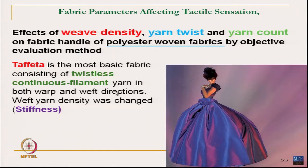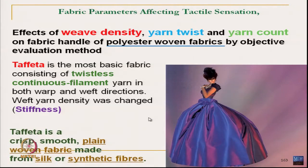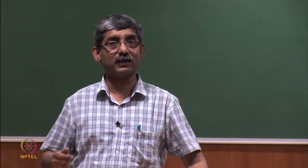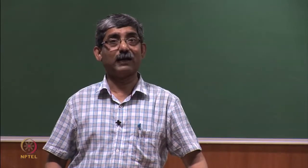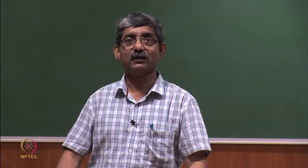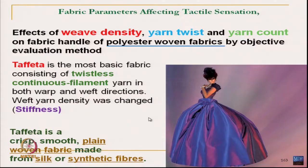Taffeta is a fabric where twistless continuous filament is used for both warp and weft yarn, and the weave density is changed to alter fabric stiffness. It is classified by crispness and smoothness — it is a smooth, crisp, plain woven fabric. It is made of either silk or synthetic fibre; here polyester continuous filament has been used.